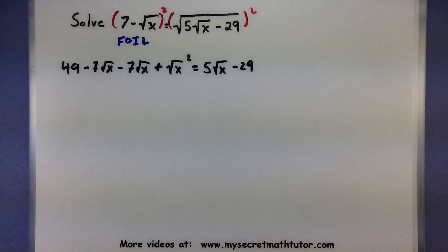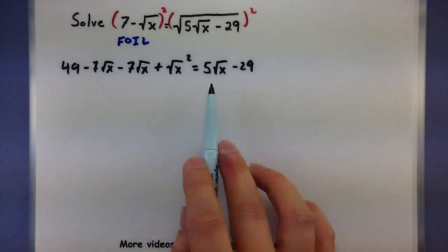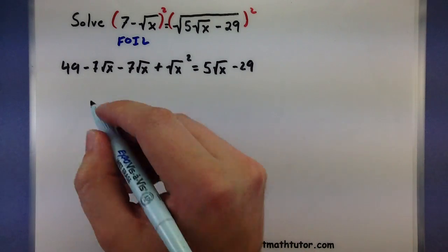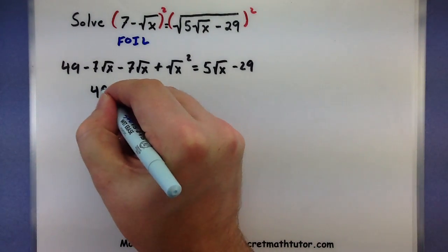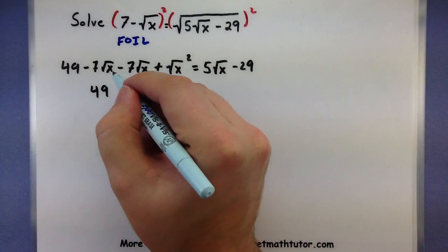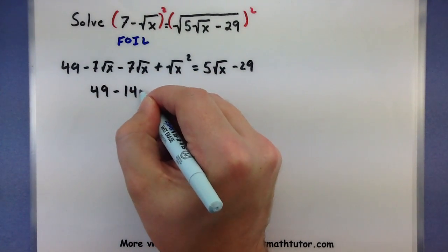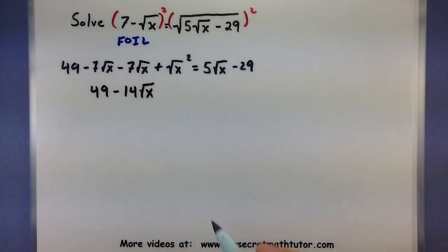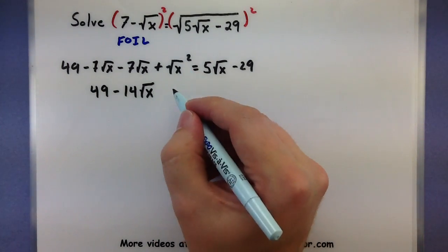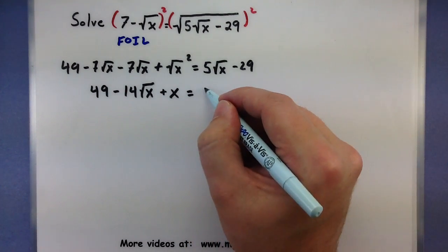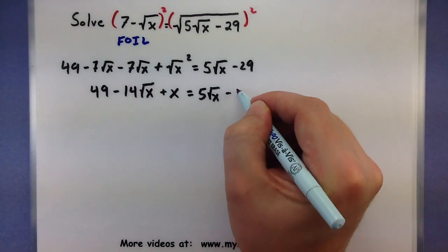We've gotten rid of a few things. But I still have a lot of roots left. Watch how many of these things we can actually combine and get rid of. So, negative 7 times the square root of X. Negative 7 times the square root of X. So, negative 14 square root of X. Putting those two together. Take a square root and square it. Now, I just have X all by itself. And 5 square root of X minus 29.